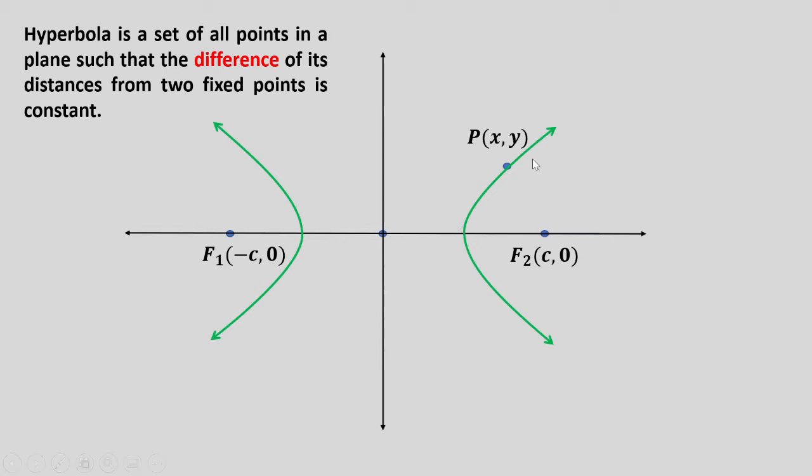Therefore, we can use this equation: distance 1 minus distance 2 is equal to 2a, where 2a would be the distance between the two vertices.